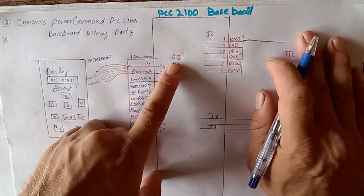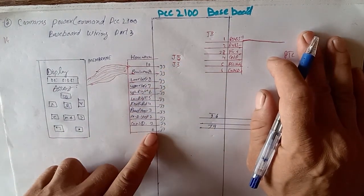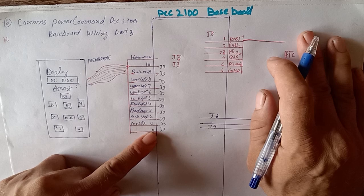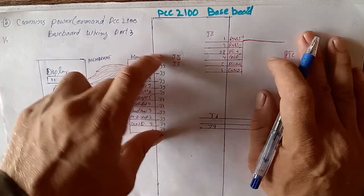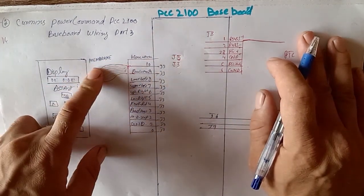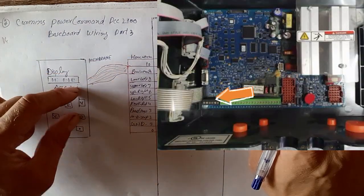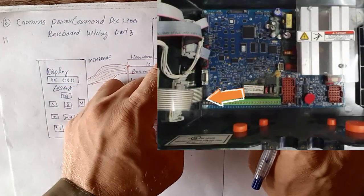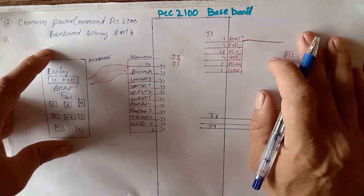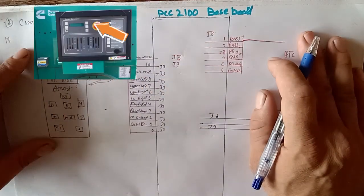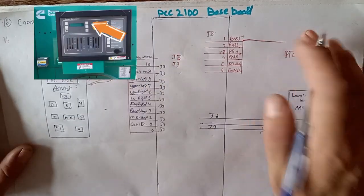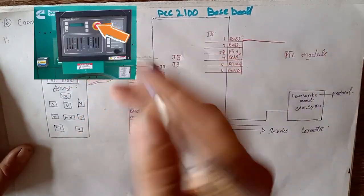As you can see here, we have J8 connector with pins from 0 to 10. This connector is membrane type, as you can see, which is coming from the PCC 2 power command controller display.